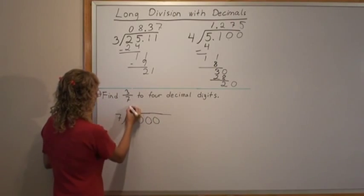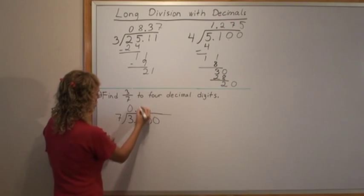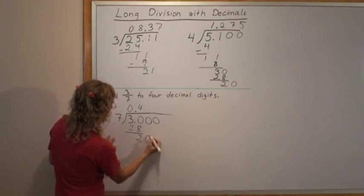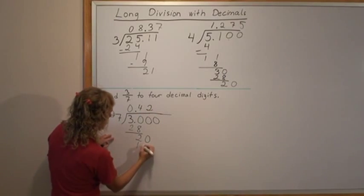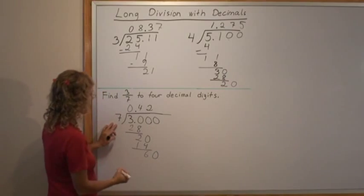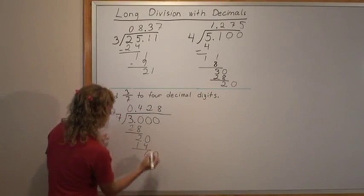7 goes into 3, no times. 7 goes into 30, 4 times. Then we get 20. It goes 2 times. And we get 60. It goes 8 times. 8 times 7.